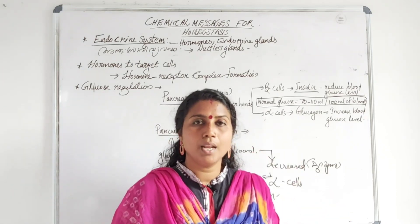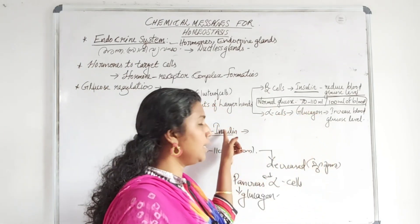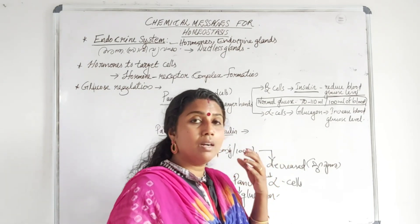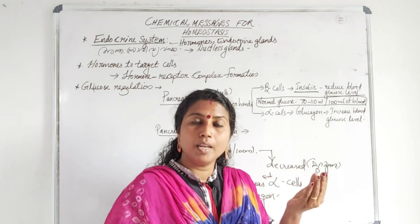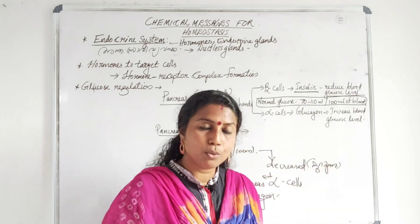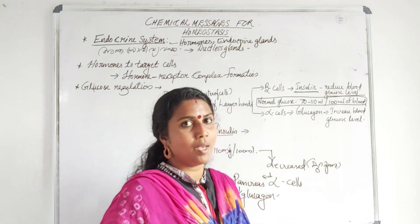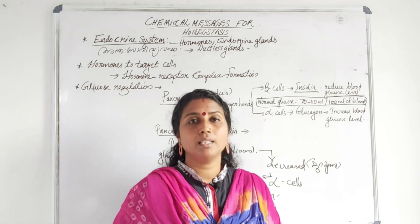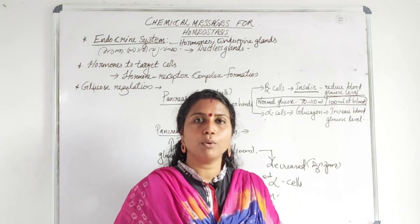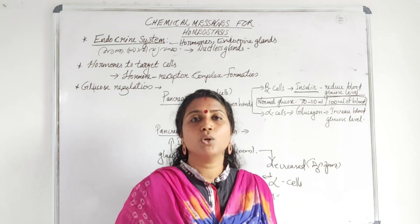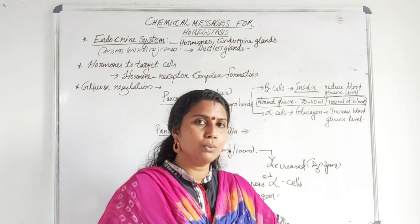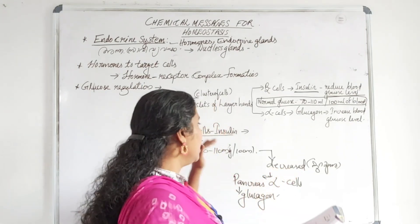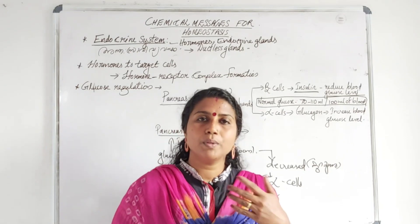Glucagon converts glycogen back to glucose. It also synthesizes glucose from amino acids and other substrates, releasing glucose into the bloodstream. Glucagon and insulin have opposite and complementary activity.